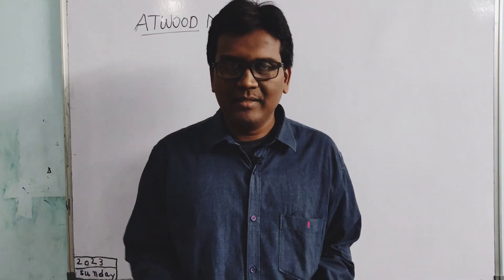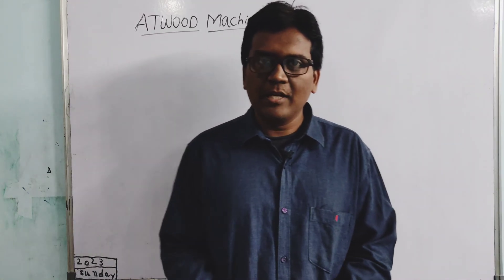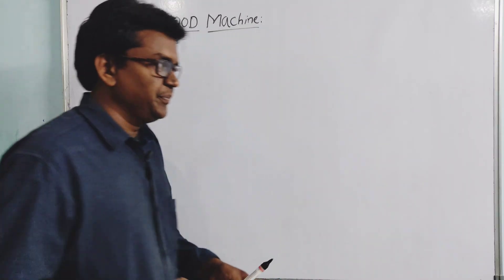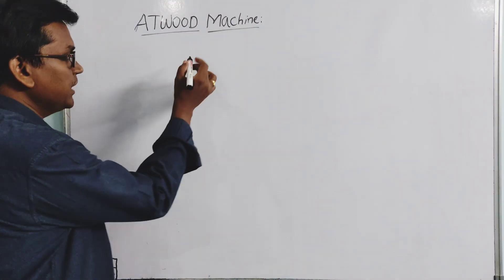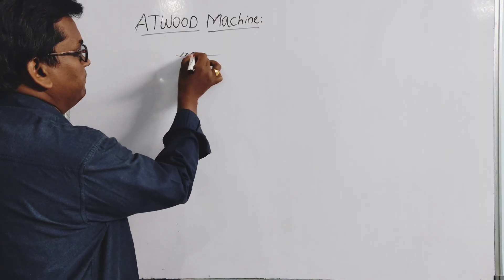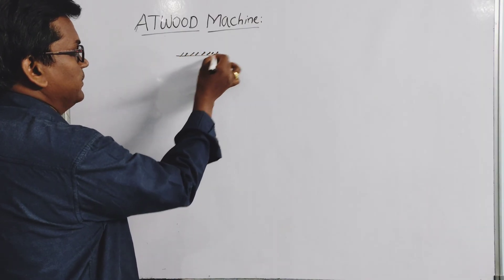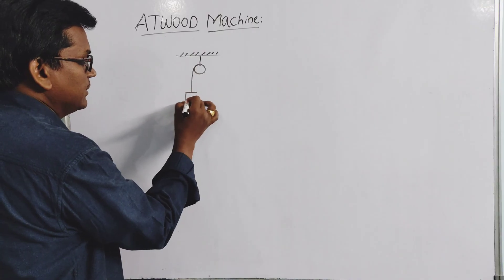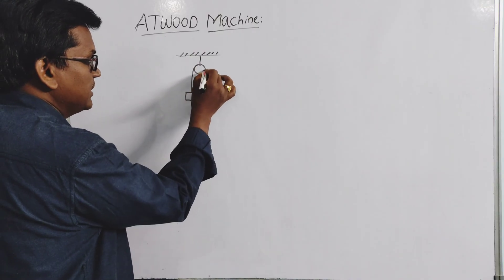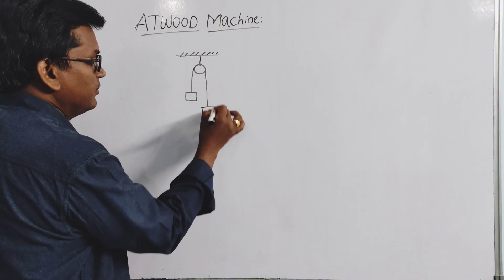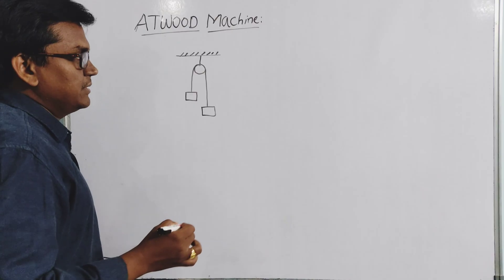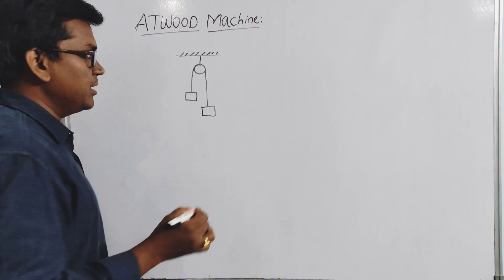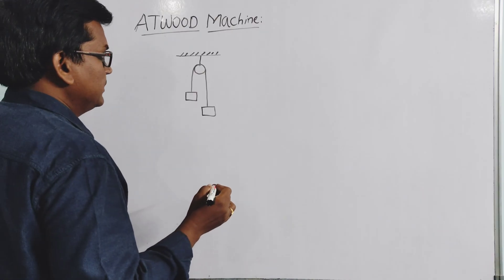Hello everyone, welcome back. In this class let us have a look at the Atwood machine. An Atwood machine consists of a pulley with masses hanging from it with the help of inextensible, thin strings.